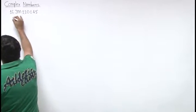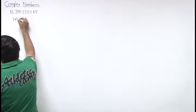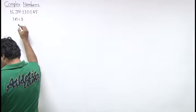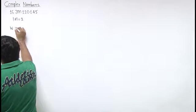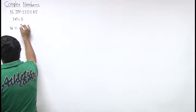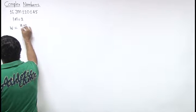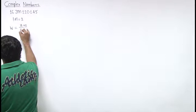In this question, we are given that mod of z equals 2 and w equals z plus 1 upon z minus 1.